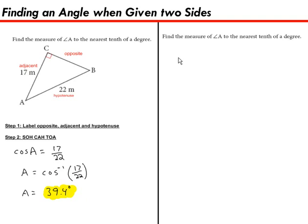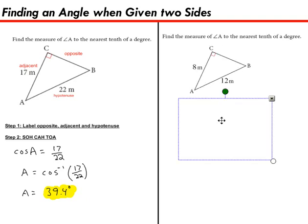And now it's time for some practice. So let's see if you can find the measure of angle A to the nearest tenth of a degree for this triangle. And just remember the steps I showed you on the left. So go ahead and try that one now.